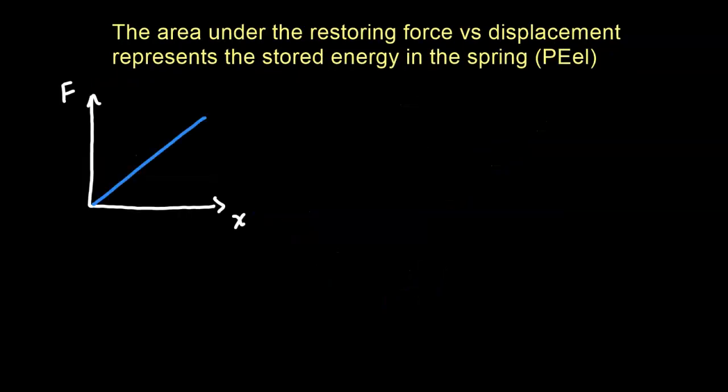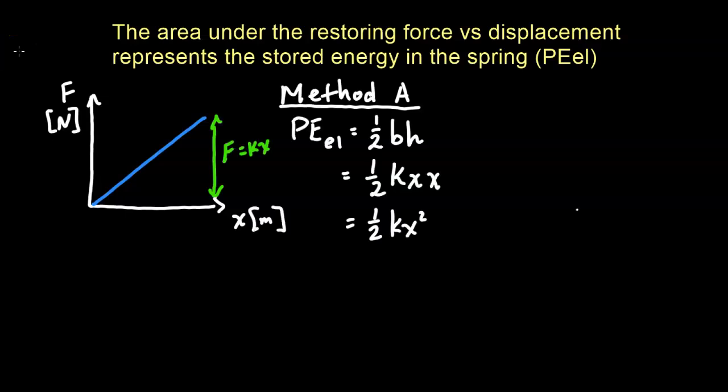Another thing we can figure out from the force-versus-displacement graph is the area under the curve, which represents the energy stored in the spring. Since the area is the shape of a triangle, we use the triangle area equation. The force is in newtons and displacement in meters, so multiplying gives newton-meters, which is a joule. So the area, one-half times base times height, where base is x and height is the force kx, gives us one-half kx squared.